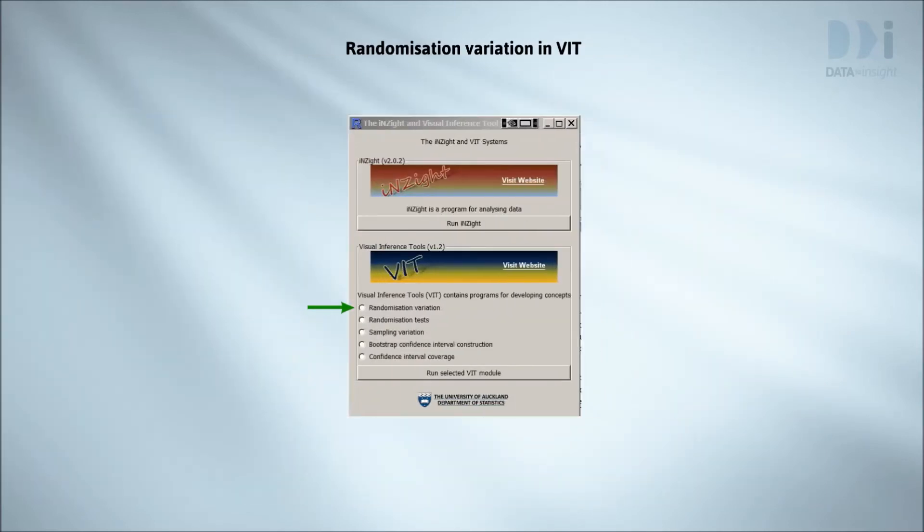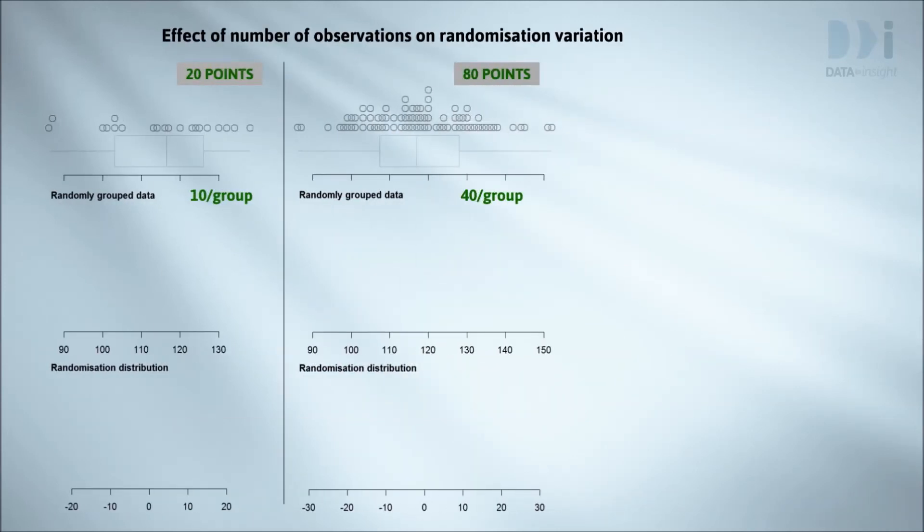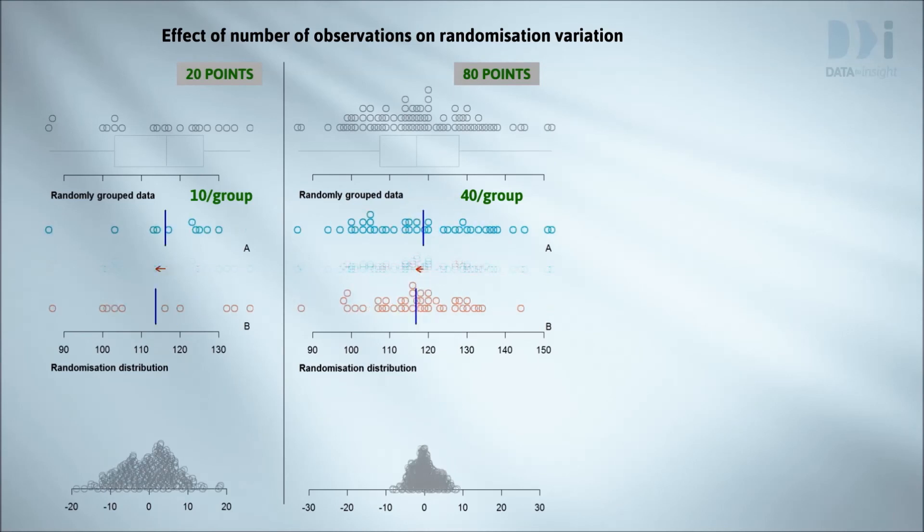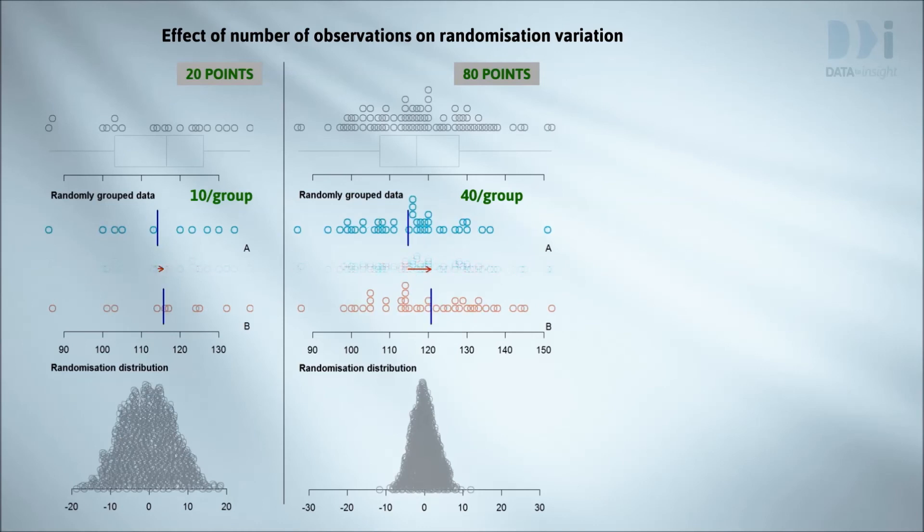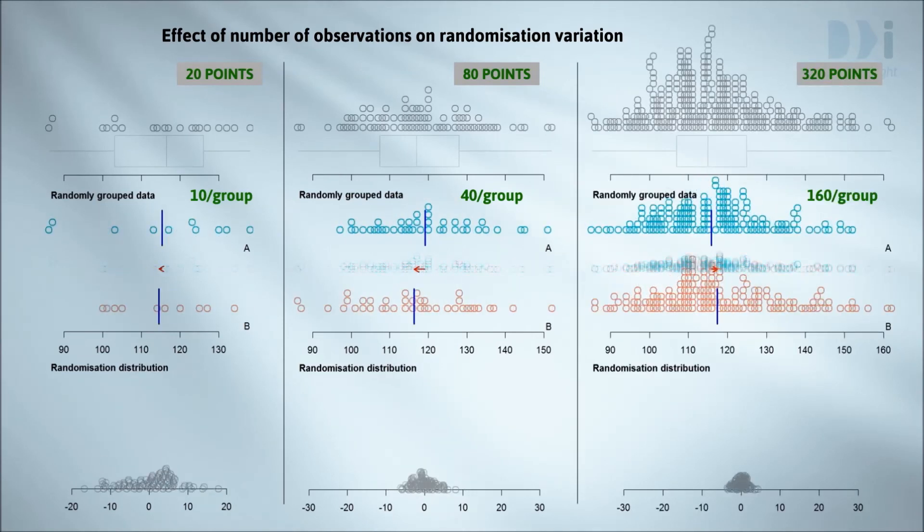The type of variation we've been seeing here is called randomization variation, and we've been using the randomization variation module in VIT. Just as with sampling error, randomization variation becomes less of a problem when we have more observations. Here we are comparing randomization variation with 10 per group and 40 per group. Here I've added 320 points.